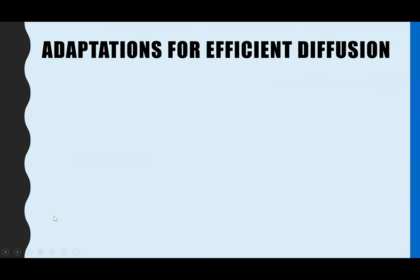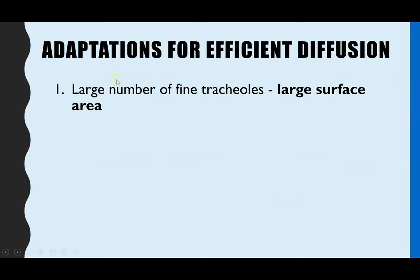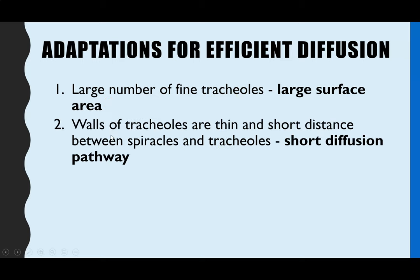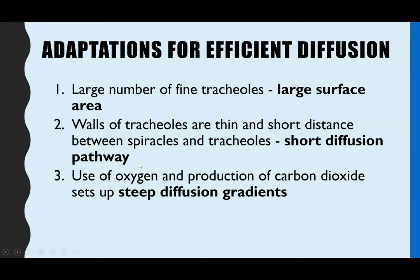In summary, for any gas exchange system you always look for what provides the large surface area — in this case it's the large number of fine tracheals plus lots of spiracles along the abdomen. You also look for a short diffusion distance: the walls of the tracheals are very thin and the distance from the spiracles to the tracheals is very short. Finally, the concentration gradient is maintained because the respiring cells use up oxygen and produce carbon dioxide, sustaining a steep diffusion gradient.